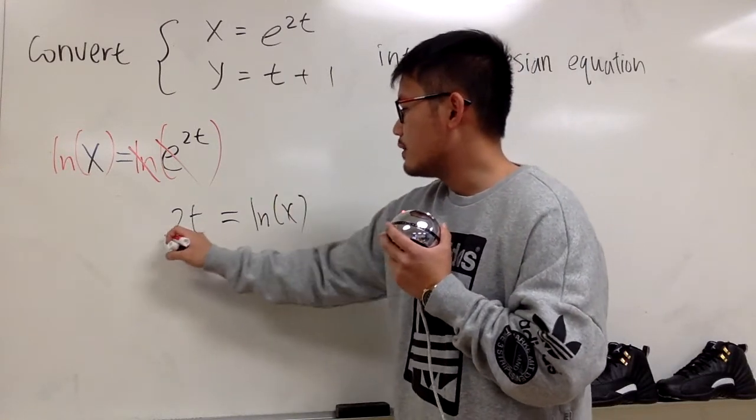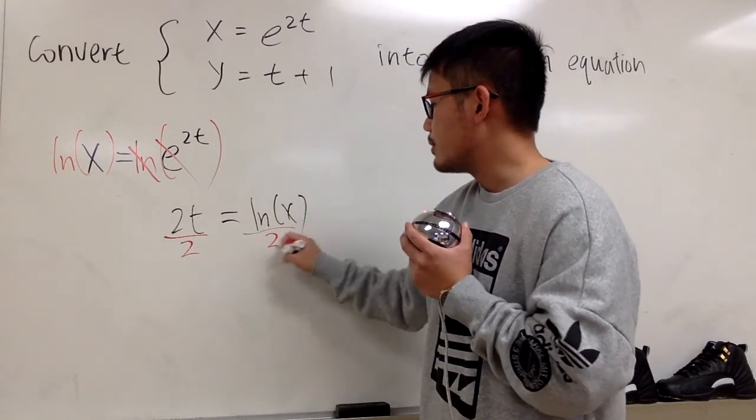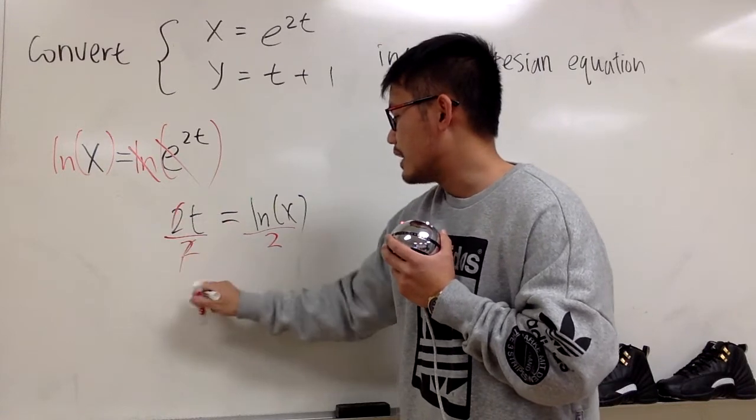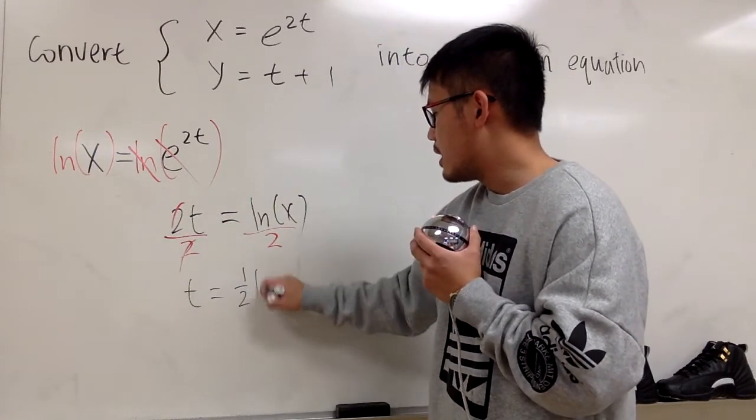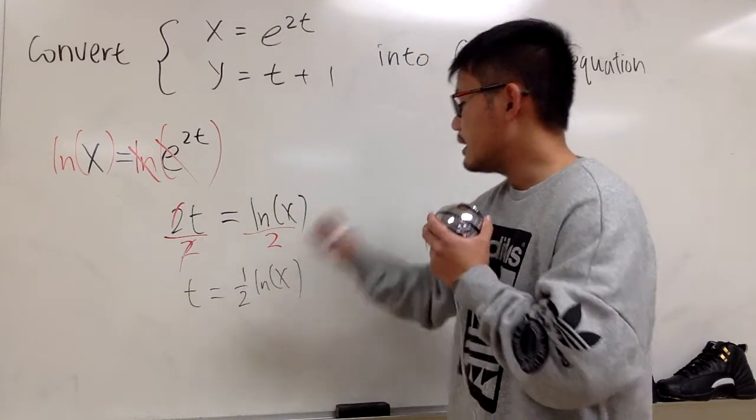Well, I want to get the t by itself. Of course, let's divide both sides by 2. So at the end, we have t is equal to, and let me write this down as 1 half lnx.